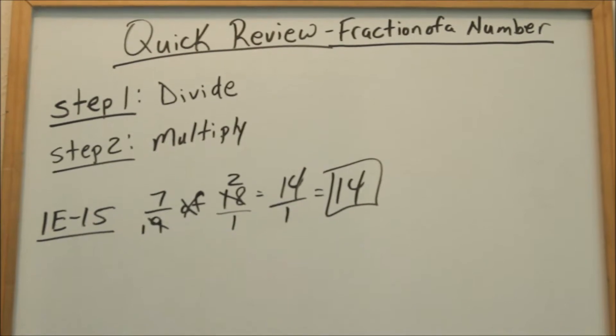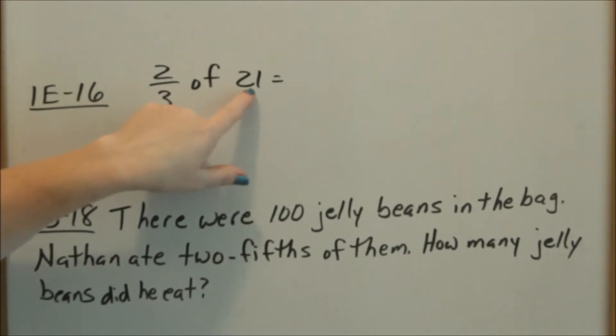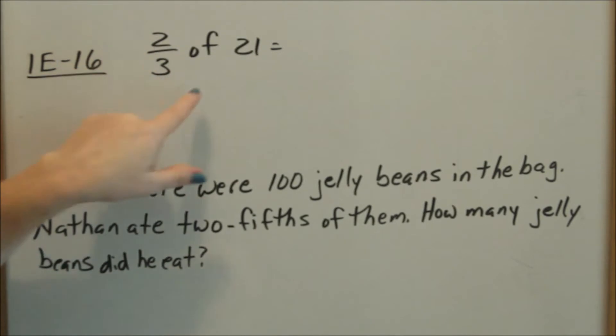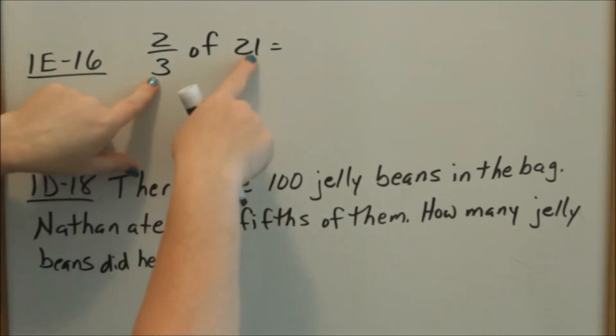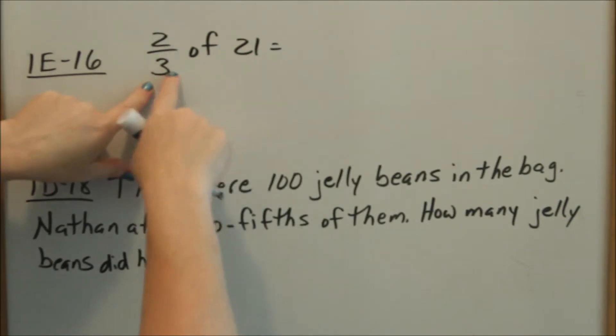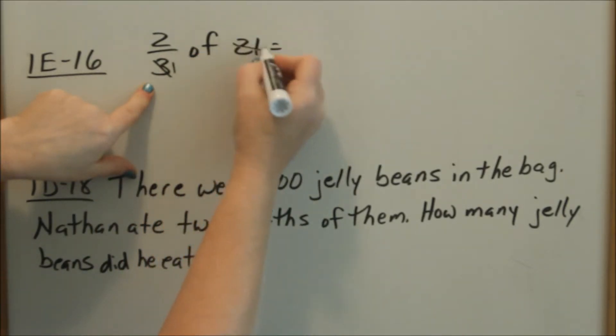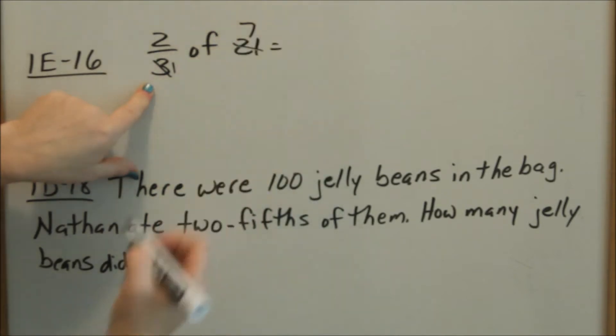Look at 1E16. I'm going to do this one without turning 21 into a fraction. Two thirds of 21. So you take your 3 and divide it into 21 or 21 divided by 3. So this becomes a 1 and 3 goes into 21 seven times because 7 times 3 is 21.